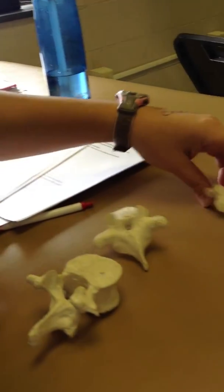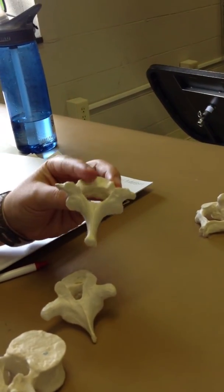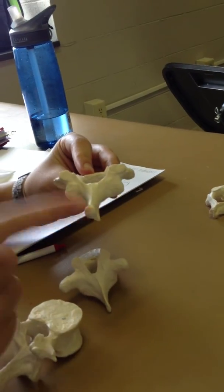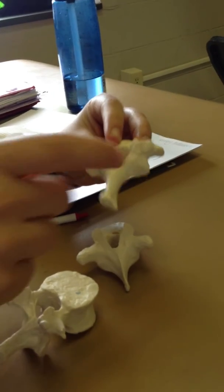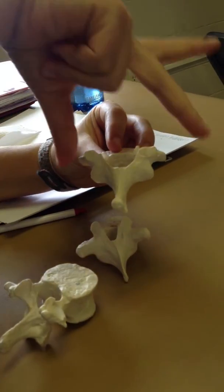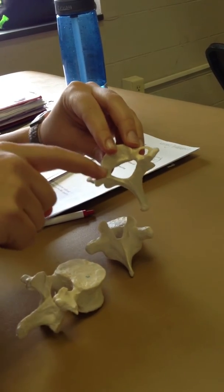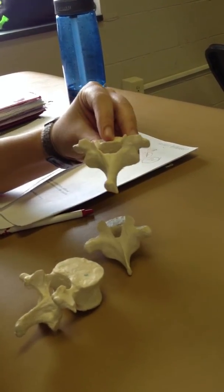Good. Okay, this is Scrat from Ice Age, and it is the cervical vertebrae. Spinous process, lamina, transverse process, pedicle is where it attaches, body, vertebral foramen.